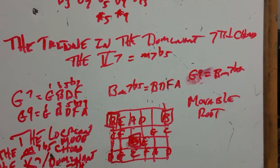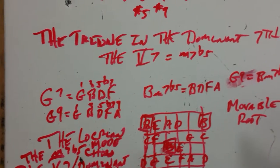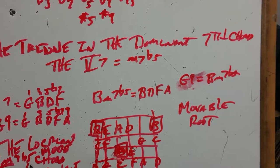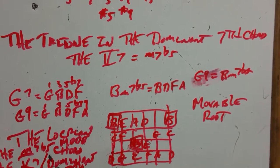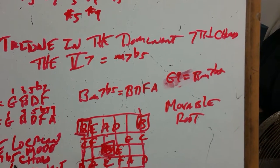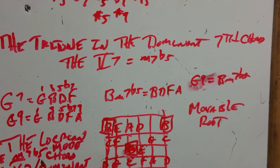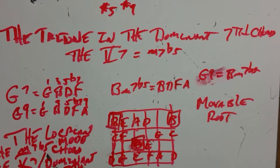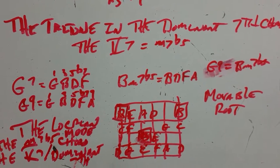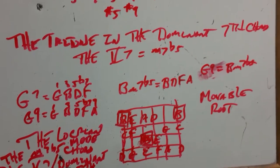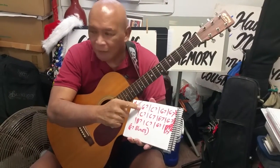As you can see, the common tones for G9 — G, B, D, F, A — and the minus 7 flat 5 is B, D, F, A. For the minus 7 chord, the 1 is B, the flat 3rd is D, the flat 5 is F, and A is the flat 7th. So in that sense, G9 equals B minus 7 flat 5. Can that work against this G7? Of course it can.